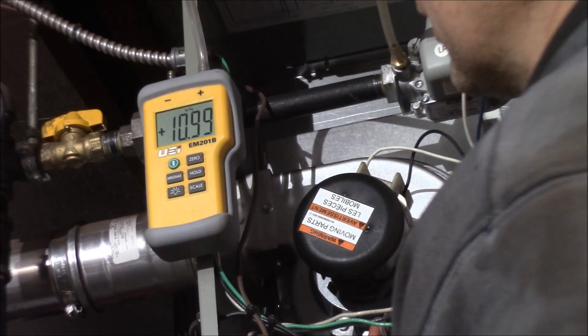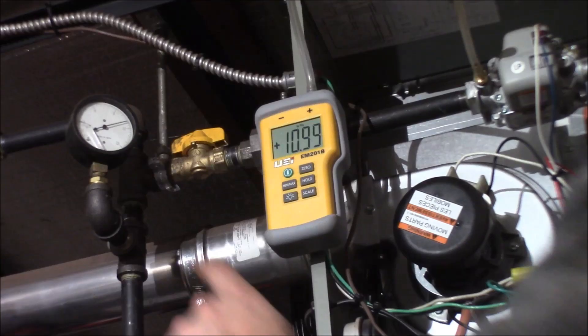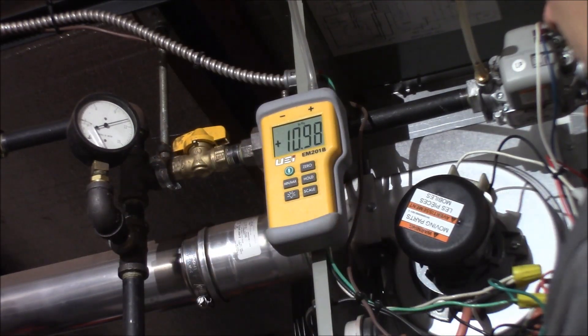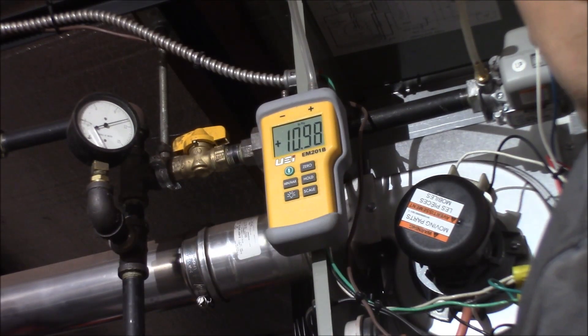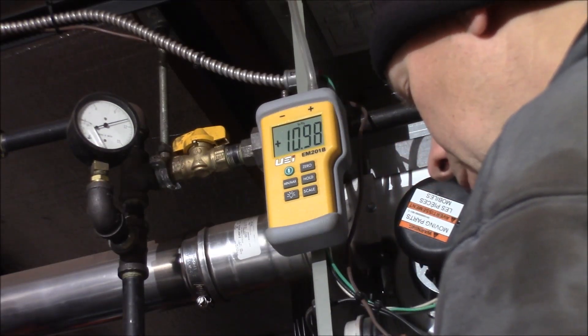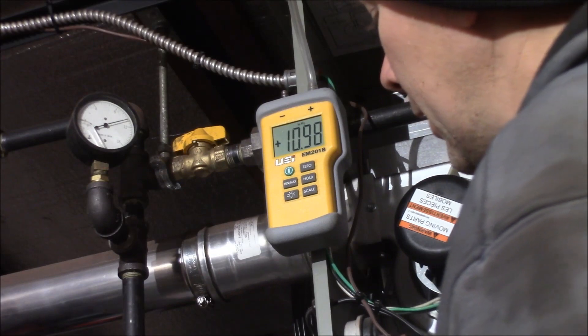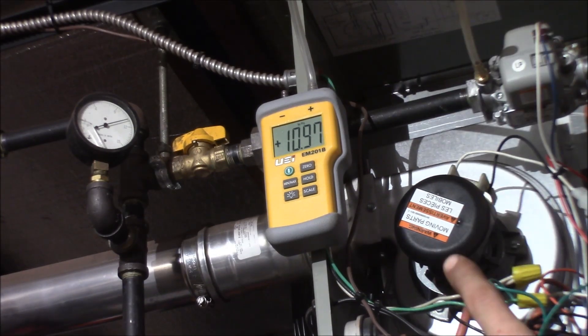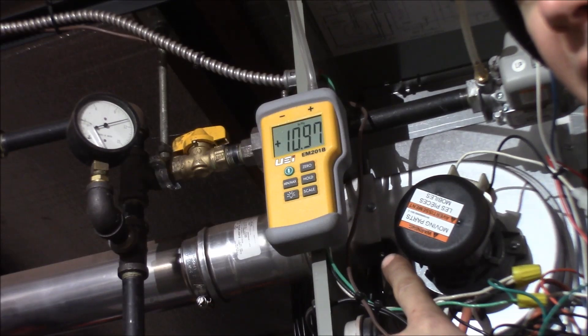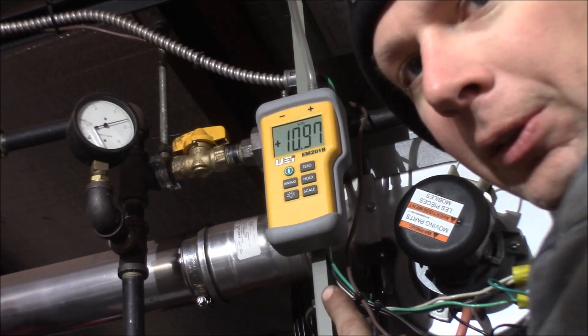So right now we're showing 11. So our gauge is right at 11, and this is right at 11. So what I want... It said inlet pressure minimum 12. So I've got 11 right now. It said they want 12. I'm going to fire up the heater and see what it drops to.